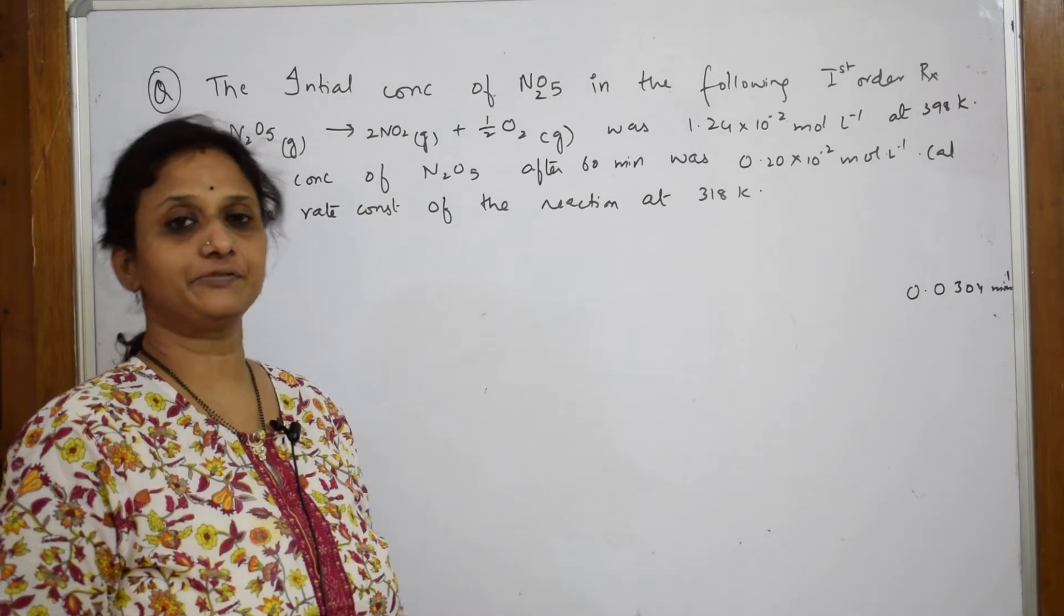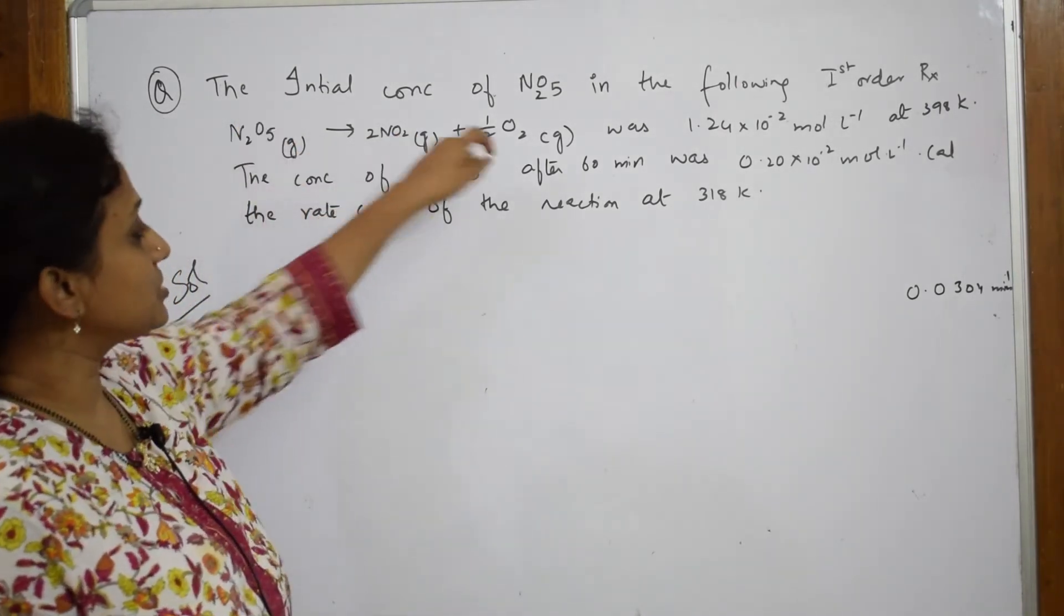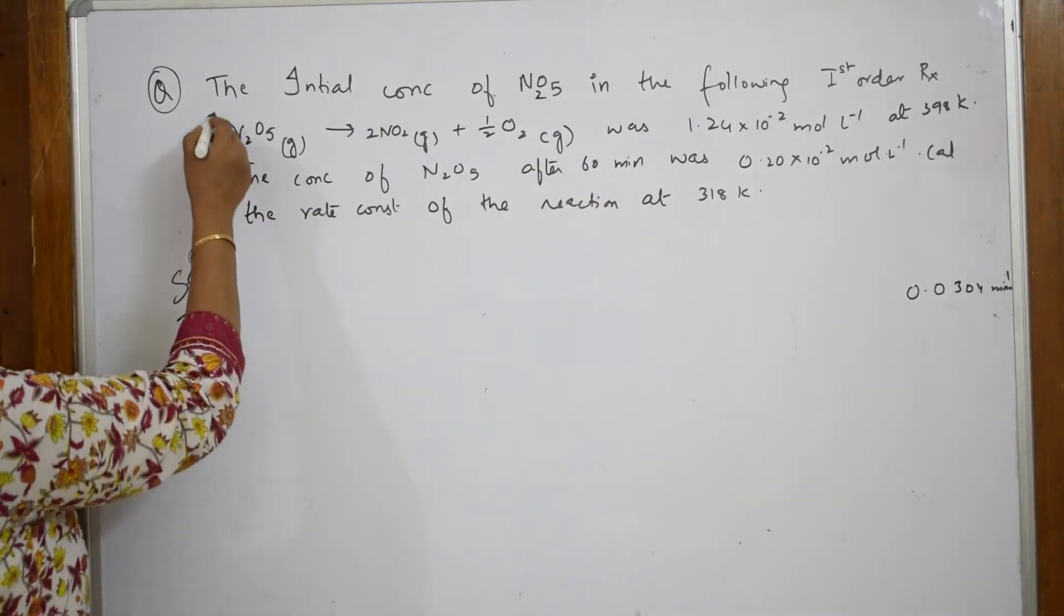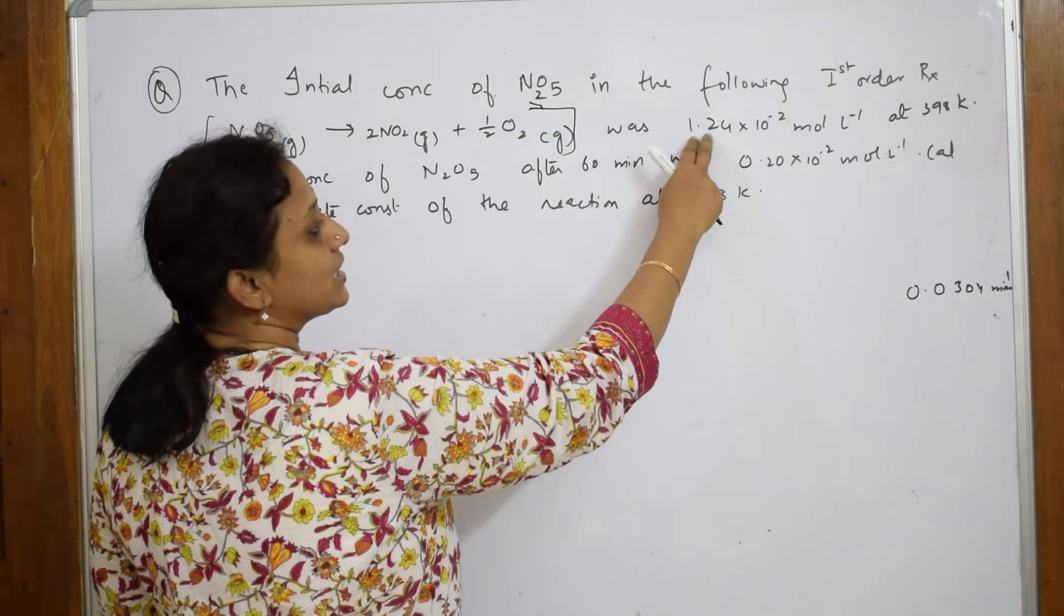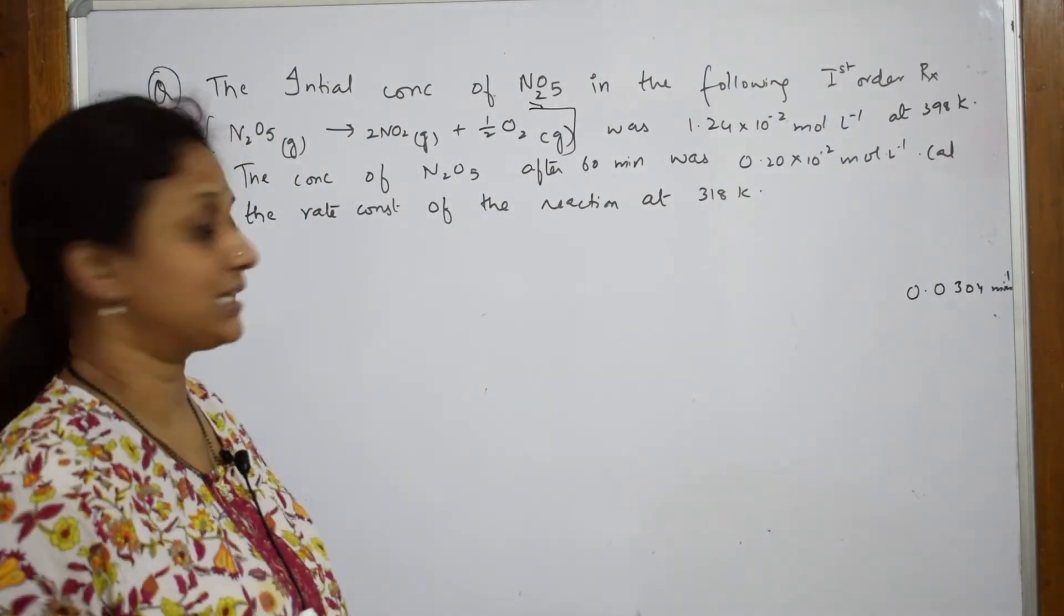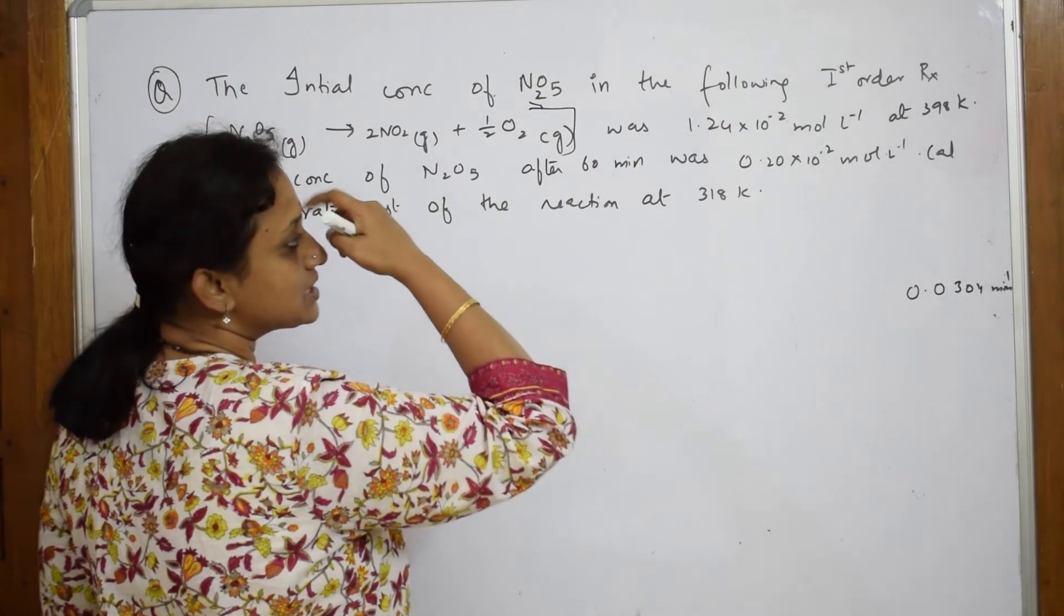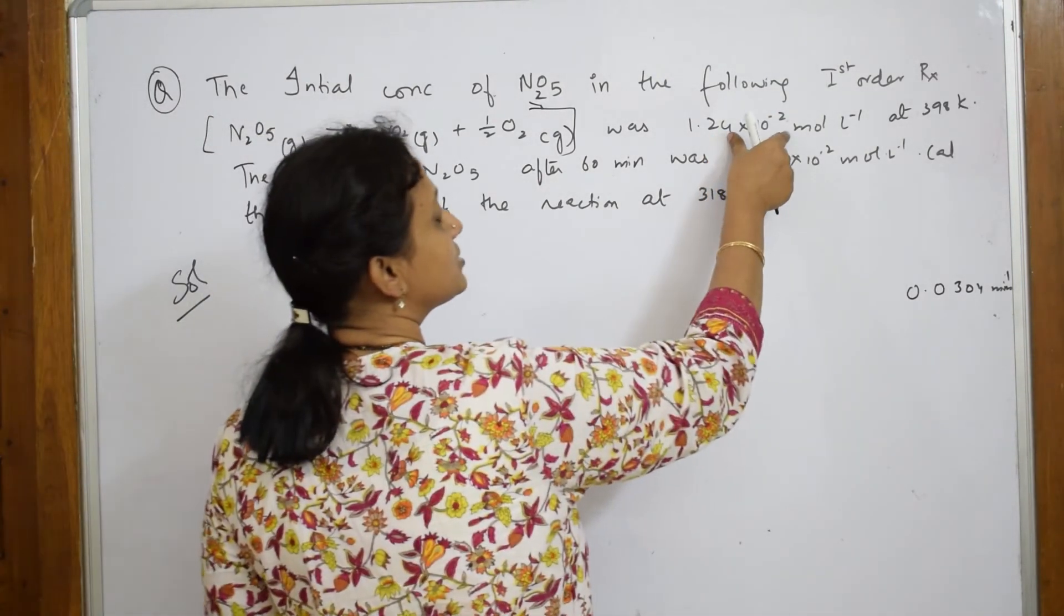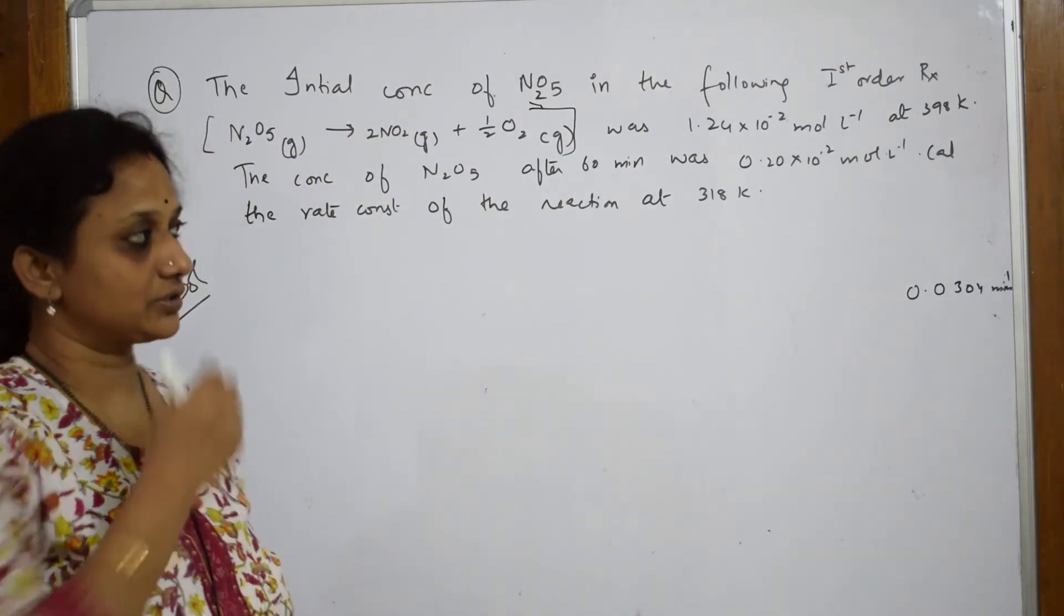One more numerical in the first order rate equations. The initial concentration of N₂O₅ in the following first order reaction. This is the reaction which is given to us and in that particular reaction, the rate constant given to us is 1.24 into 10 raised to minus 2 at 318 Kelvin. Then they said the concentration of N₂O₅ after 60 minutes was so much. The concentration value is given. Here also they have given one concentration and here they have given one more concentration.